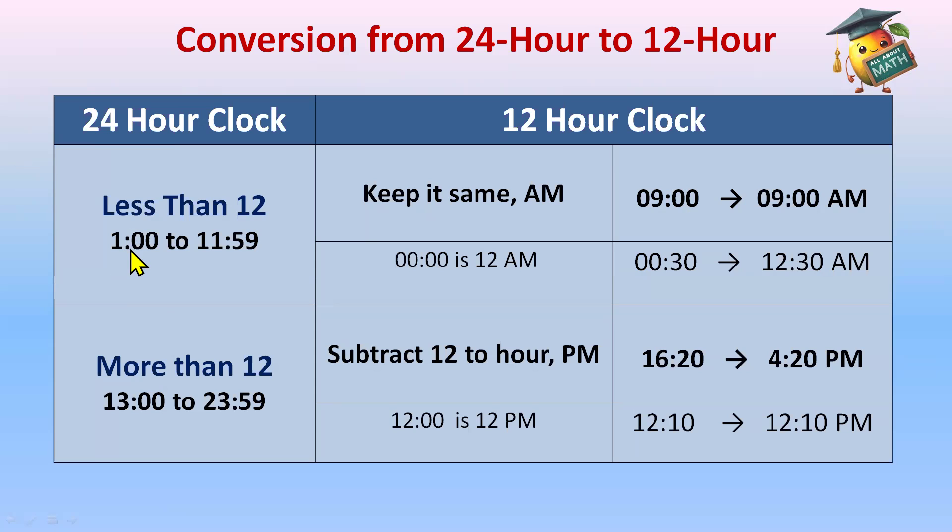Or you can say if the numbers are from 1:00 to 11:59 we will keep the numbers same. But when we have 00:00 in a 24 hour clock it will be 12 A.M., just starting of the day. So 00:30 will be 12:30 A.M.